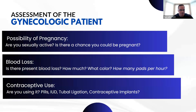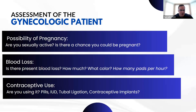When asking about pregnancy possibility and related questions, remember where you're at and who's in the room. If it's a younger female patient and mom, dad, or siblings are present, many of these questions can wait until we're in the medic unit where we can provide some privacy. Are you sexually active? Is there a chance you could be pregnant? Remember, if it's a female patient of childbearing age, there is always a chance. The youngest patient I've had who was pregnant was 12 years old, so it's not just 18- to 22-year-olds we should be asking.